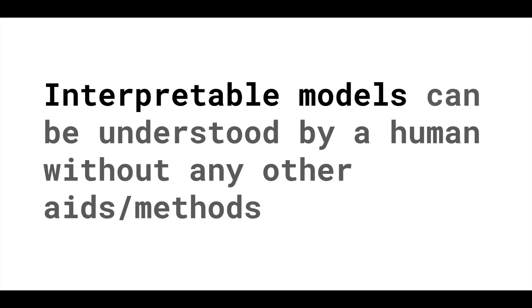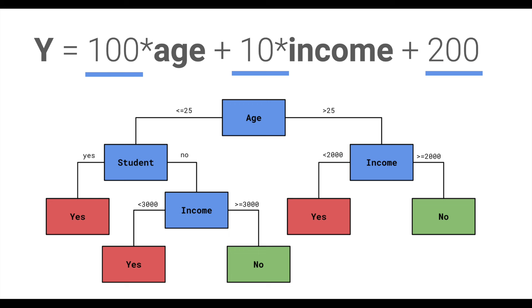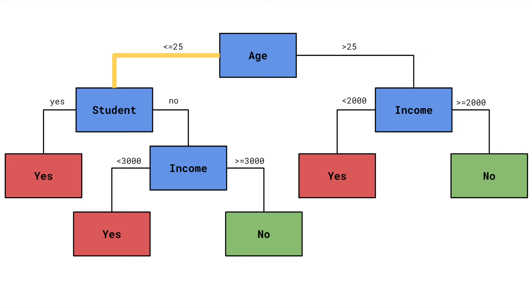We say something is interpretable if it is capable of being understood. With that in mind, we say a model is interpretable if it is capable of being understood by humans on its own. We can look at the model parameters or a model summary and understand exactly how a prediction was made. A decision tree is a good example — to understand how a prediction was made, we simply have to traverse down the nodes of the tree.